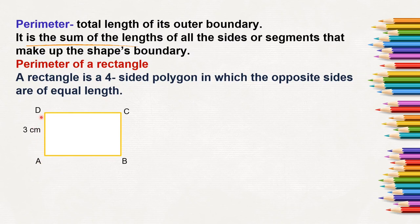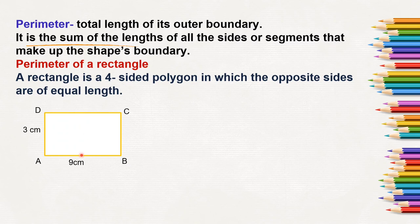So if DA is 3 cm, CB will also be 3 cm. And if AB is 9 cm, DC will also be 9 cm, as the opposite sides are of equal length in a rectangle.